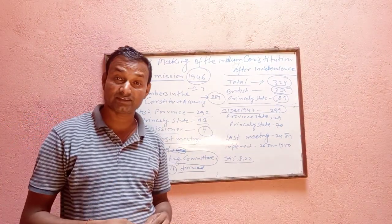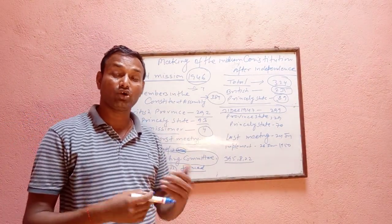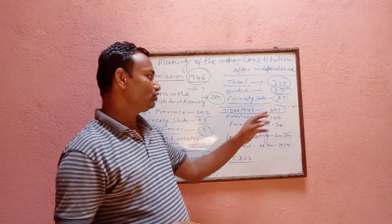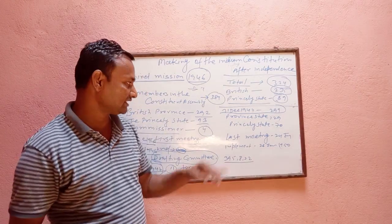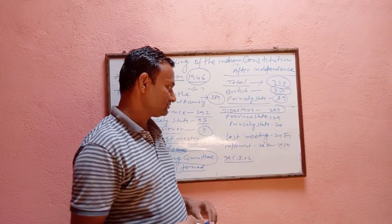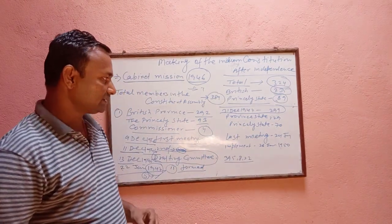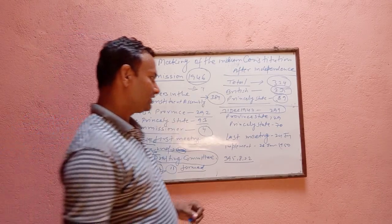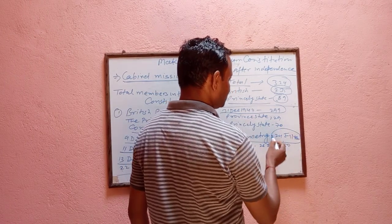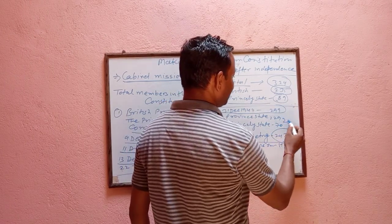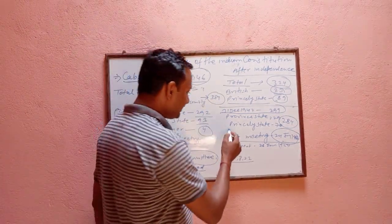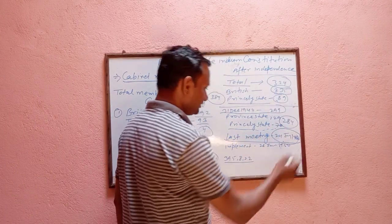In January 1947, the Indian constitution was re-organized. The assembly had 289 members, of which 255 were from elections. In the last meeting on 24th January 1950, 284 members signed the Indian constitution.